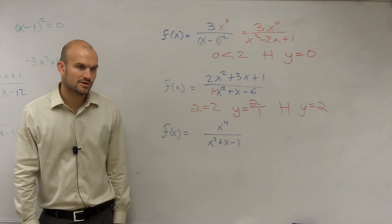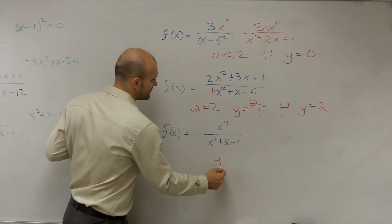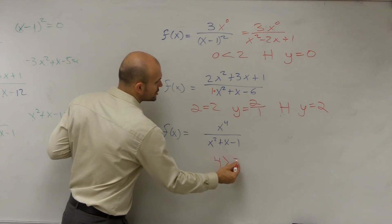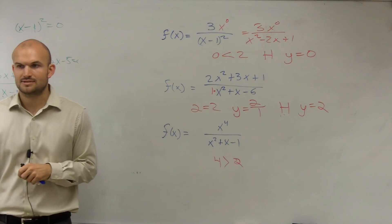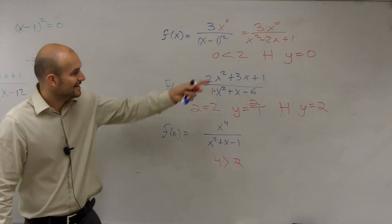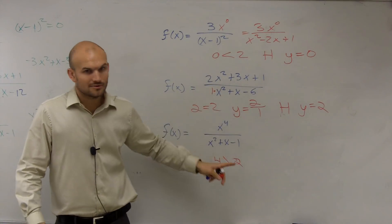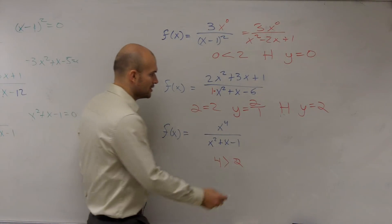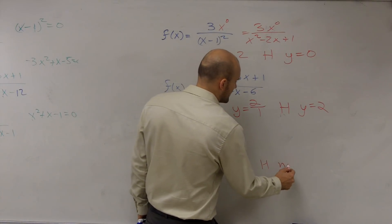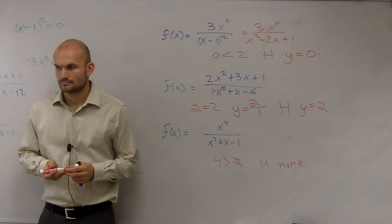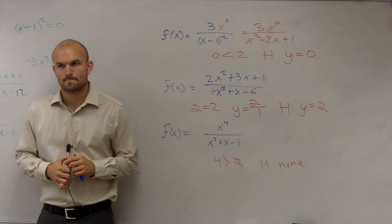Then let's look at the third example. The third example, we now have the degree in my numerator is now larger than my horizontal asymptote. So there's only three things we can have, right? It's either smaller, equal to, or greater. When you have your degree in the numerator is larger than the degree in the denominator, you do not have a horizontal asymptote.